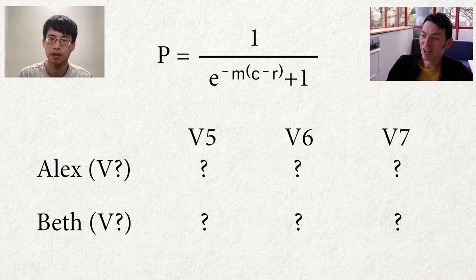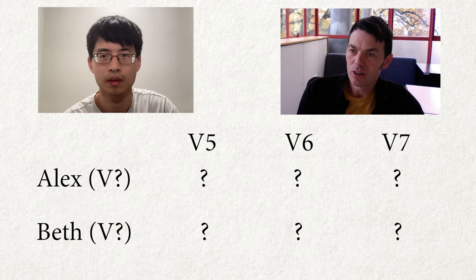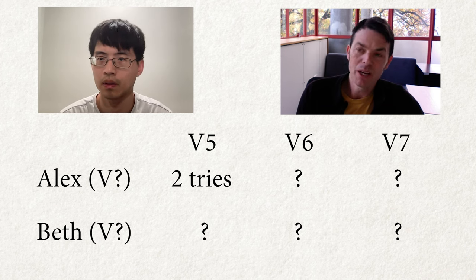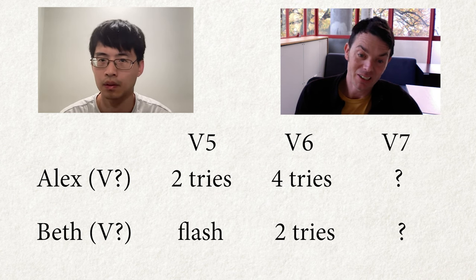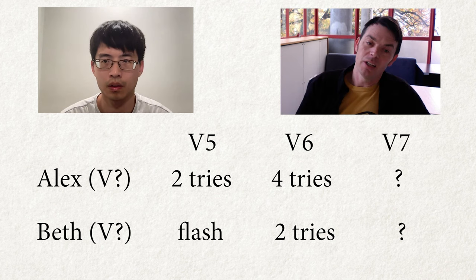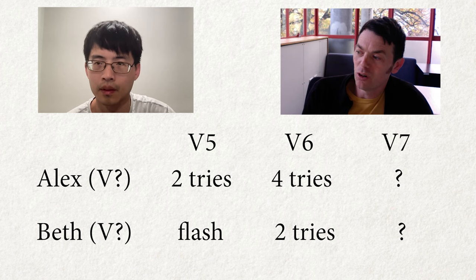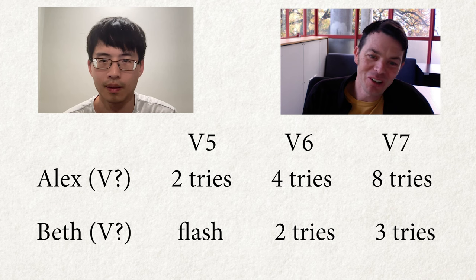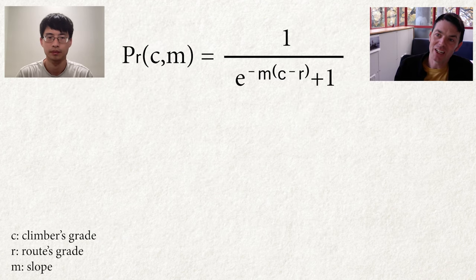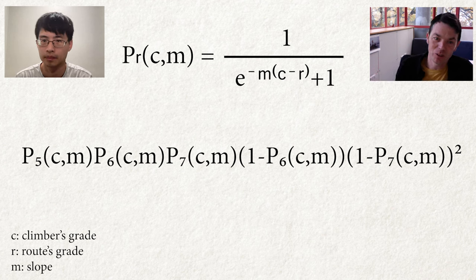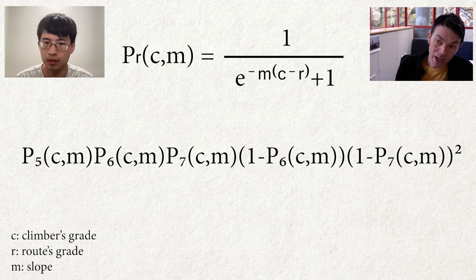In reality, we typically don't have the climbers' grades, but we can use the outcome of that day of bouldering to estimate them. Alex fails to flash boulder A (V5) but gets it on her second attempt, while Beth flashes it. On boulder B (V6), Alex fails three times and gets it on her fourth go; Beth fails the flash but gets it second go. On the V7, Alex has seven attempts before getting it on her eighth; Beth gets it on her third. The data we now have is successes and fails for each climber on each boulder. For any grade proposed for Beth, we can compute the total probability of seeing all six outcomes and find the grade that maximizes that probability — that's called the maximum likelihood estimate.